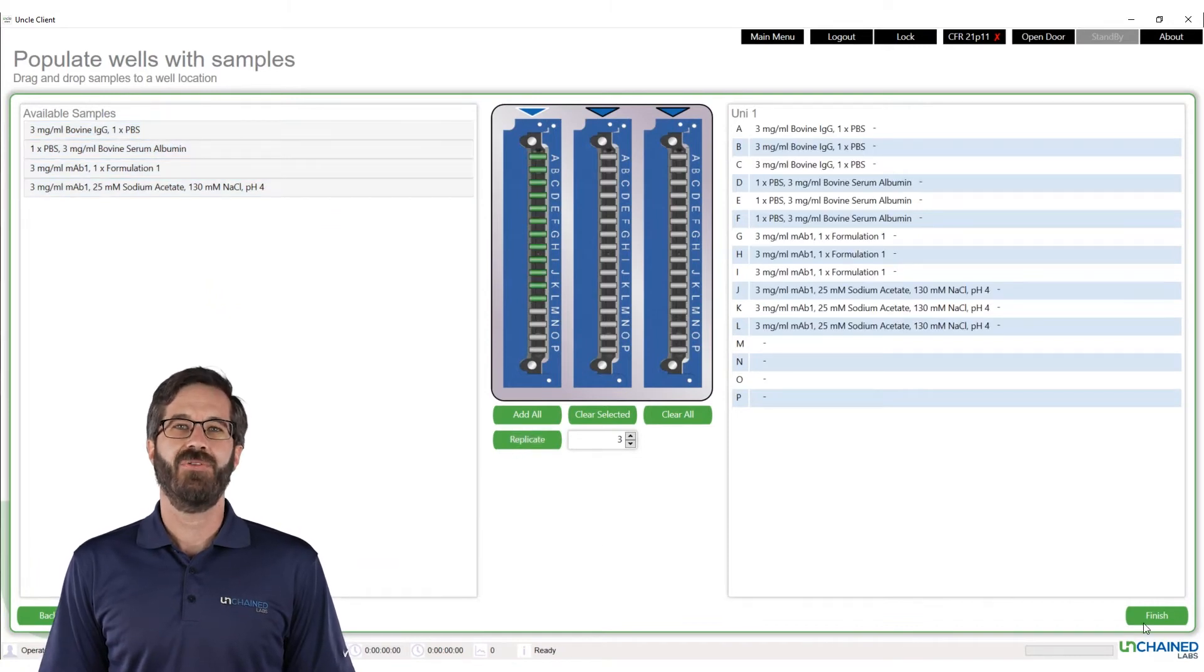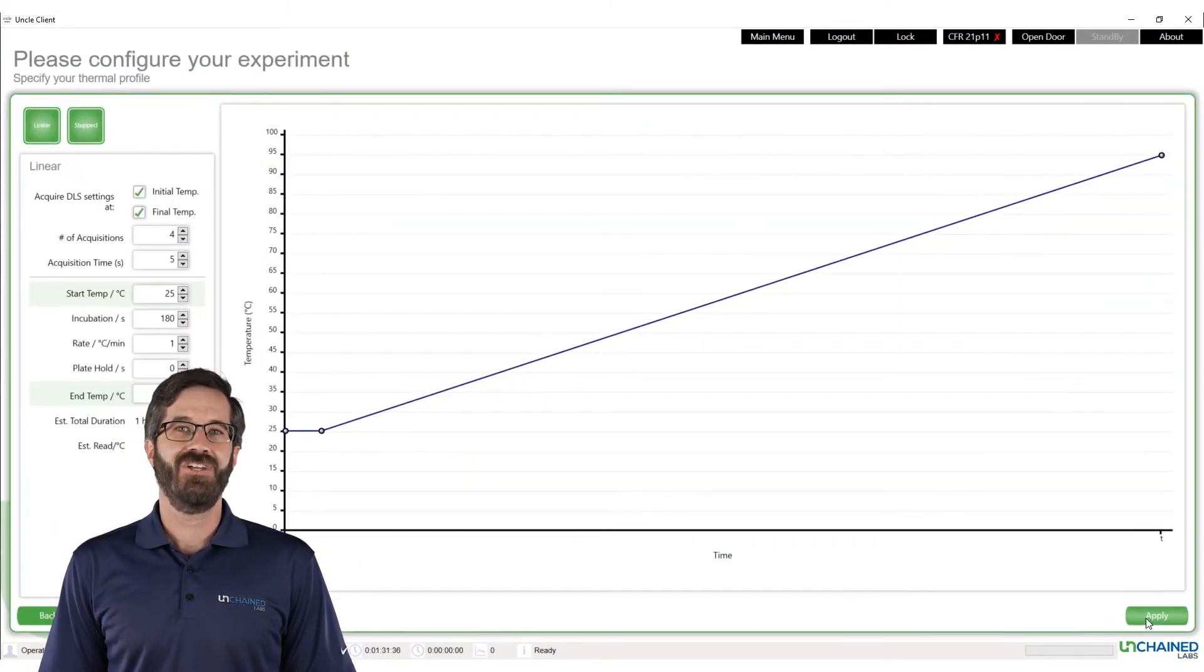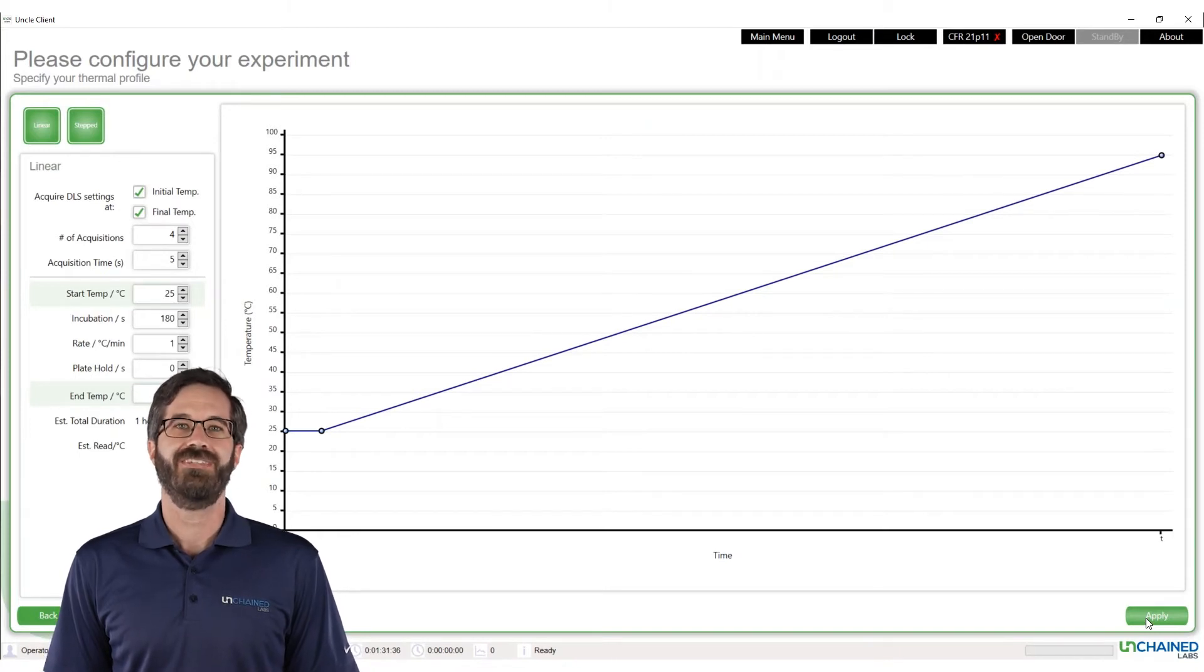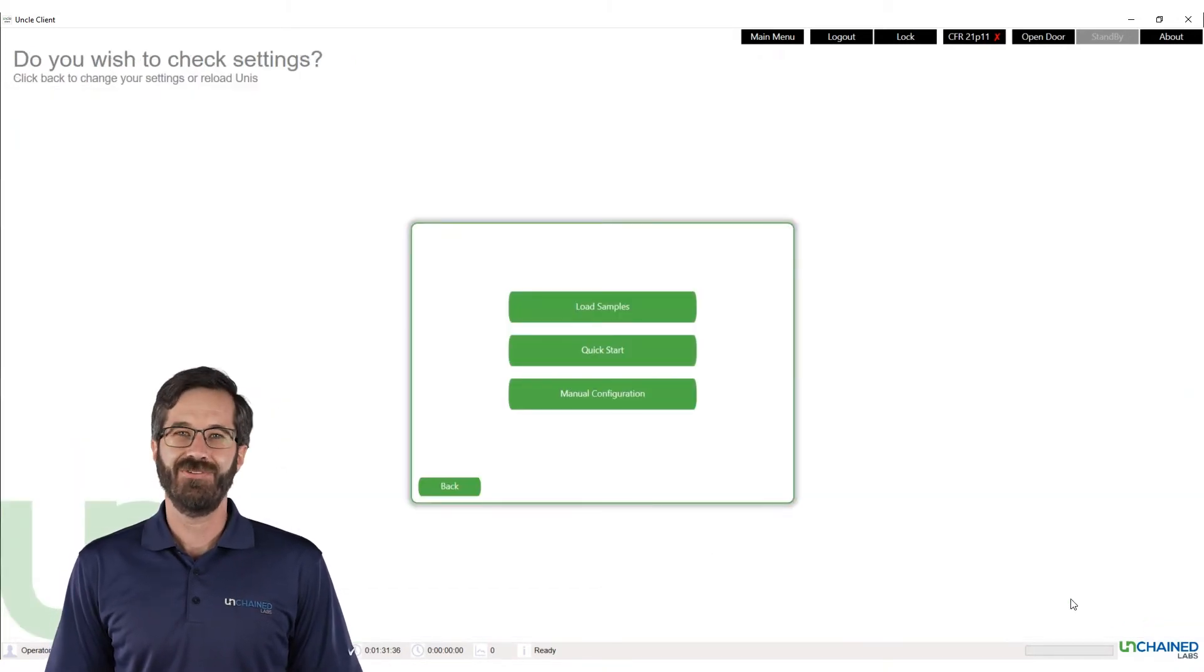With the setup shown, UNCLE will also gather DLS information before and after the run to quickly check sample quality before a run or to orthogonally confirm aggregation after one. And we're ready to hit the load samples button.